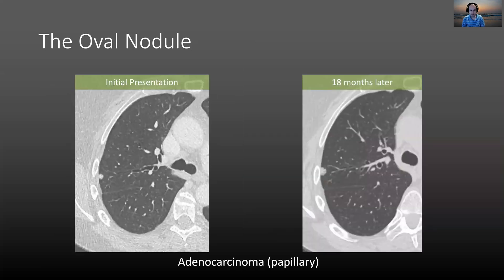Very rarely, lung cancers can present as an oval nodule. Here is one example — it was a slowly growing nodule, and on follow-up you can see some lobulation to the contour, but otherwise it's a solid oval nodule. This turned out to be an adenocarcinoma, but that is a very uncommon presentation of lung cancer.